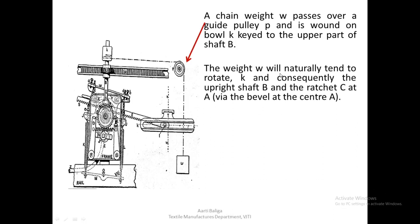Weight W, being suspended, will naturally tend to move downwards and will try to rotate K, and consequently the upright shaft B will try to rotate in a particular direction. The ratchet at C on center A — once this upright shaft tends to rotate, it will try to rotate the bevel behind this ratchet and automatically try to rotate the ratchet, but this is prevented by the detents.